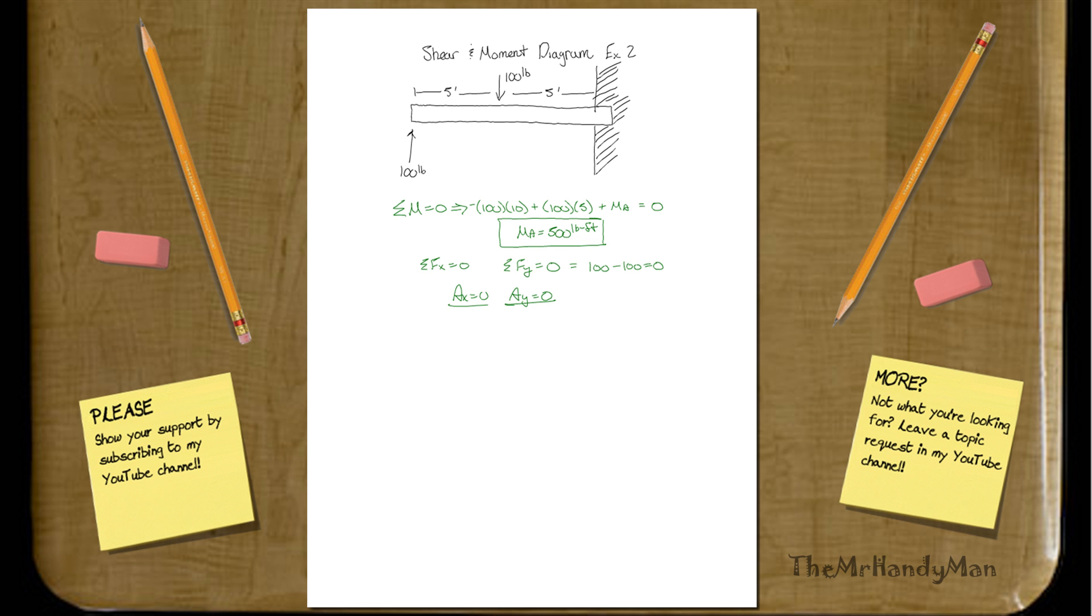Now, let me do a quick drawing. Here, we have 100, then you have 100. And then you have this moment, which I'm just going to say is in this direction, at 500 pounds. Okay, so, now we just have to work our way there.